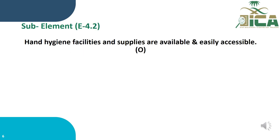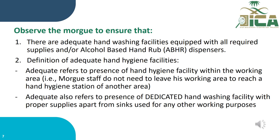Sub-Element E.4.2: Hand hygiene facilities and supplies are available and easily accessible. This is assessed by observation. Observe the morgue to ensure there are adequate handwashing facilities equipped with all required supplies and/or alcohol-based hand rub dispensers. 'Adequate' means hand hygiene facilities are within the working area — morgue staff do not need to leave their working area to reach a hand hygiene station. It also means there is a dedicated handwashing facility with proper supplies, separate from sinks used for other working purposes.